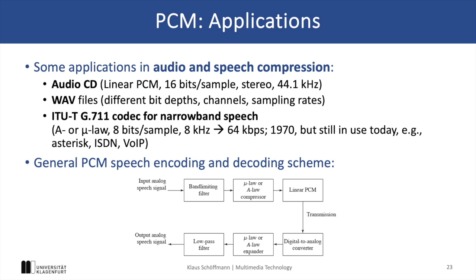The signal first undergoes a band-limiting filter, then mu-law encoding is applied with a subsequent linear PCM. When this signal is converted back to a digital signal at the decoder, the output typically contains a staircase-like signal that might also have some high-frequency noise. This is the reason why after the mu-law expansion, a low-pass filter is applied to the reconstructed signal to filter out this noise.